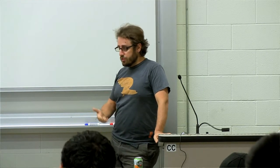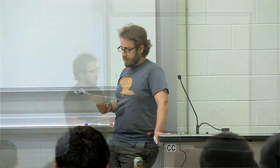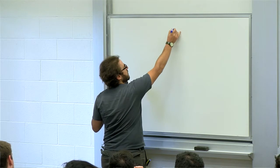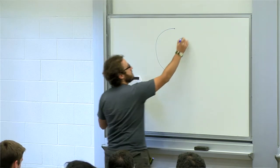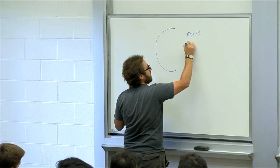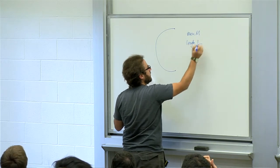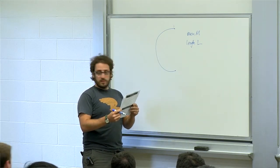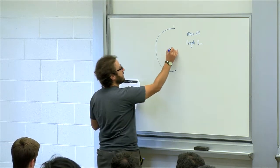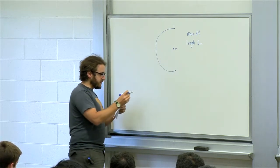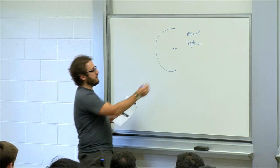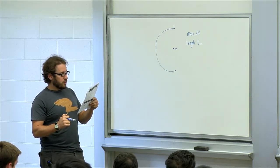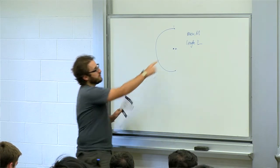Today I'm just going to do a zillion example problems, or we are going to do them together. This problem says: a uniform wire with mass m and length l is bent into a semi-circle. Find the magnitude and direction of the gravitational force this wire exerts on a point mass m placed at the center of curvature of the semi-circle.